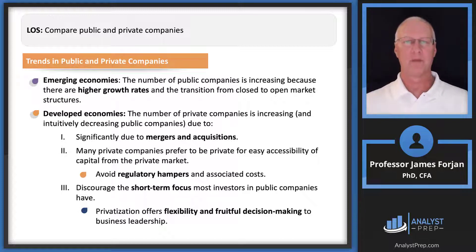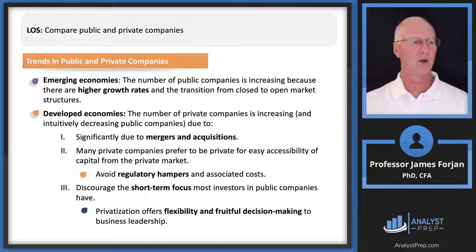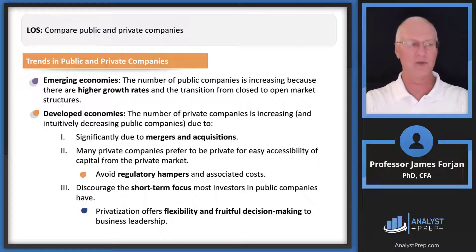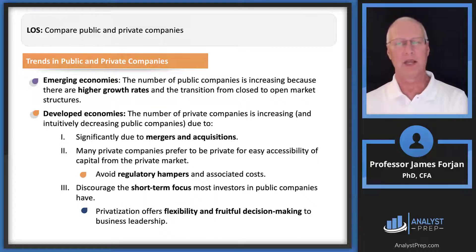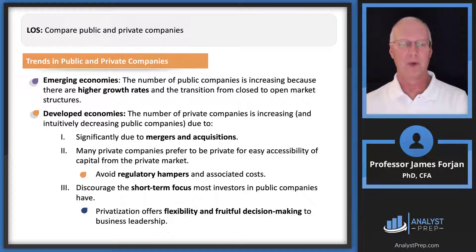Some trends: in emerging economies, the number of public companies is increasing because of higher growth rates. In developed economies, the opposite is true. The Wilshire 5000 once had over 7,000 stocks — around 1995 or 1998 — but now in the 2020s it has around 3,800 stocks. We have a shrinking public listing in developed markets, probably due to onerous regulations.